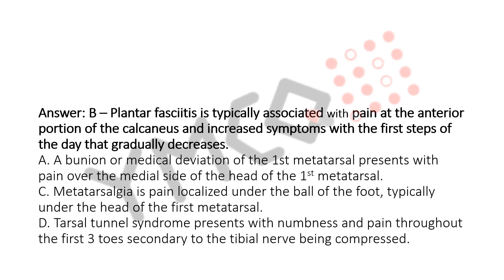Option A, bunion or medial deviation of the first metatarsal, presents with pain over the medial side of the head of the first metatarsal. Option C, metatarsalgia, is pain localized under the ball of the foot, typically under the head of the first metatarsal. Option D, tarsal tunnel syndrome, presents with numbness and pain throughout the first three toes secondary to the tibial nerve being compressed.